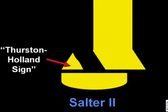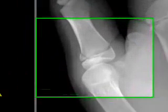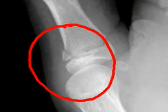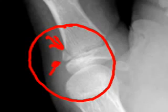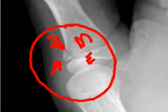The corner is also called the Thurston-Holland sign. Here's an example of a Salter-Harris 2 fracture of the proximal phalanx of the thumb. You can see that there is a fracture line that separates a tiny fragment from the remainder of the metaphysis. This is the epiphysis. We can't see the fracture through the growth plate itself, but this is a Salter-Harris 2 fracture — there is a fracture through the epiphyseal plate.